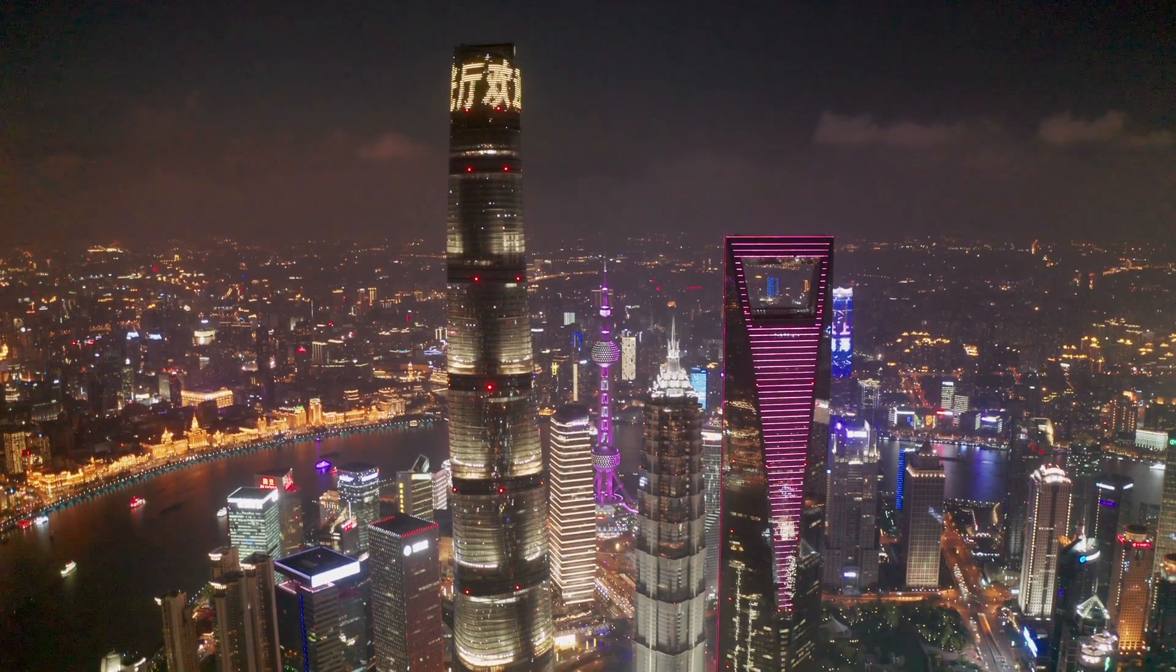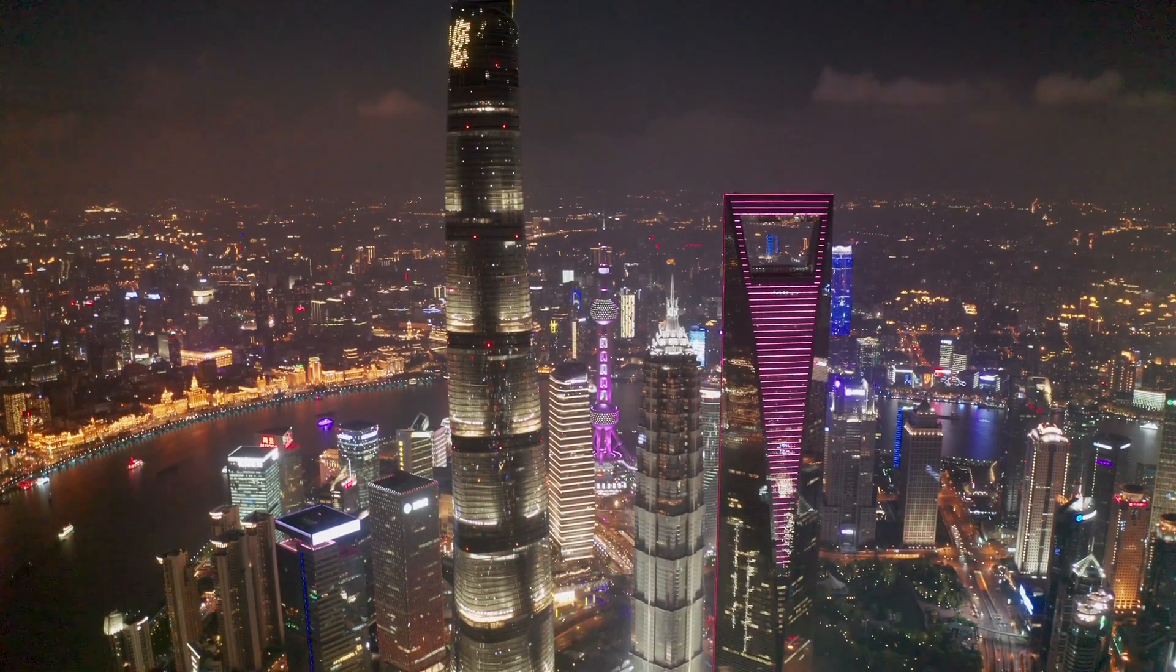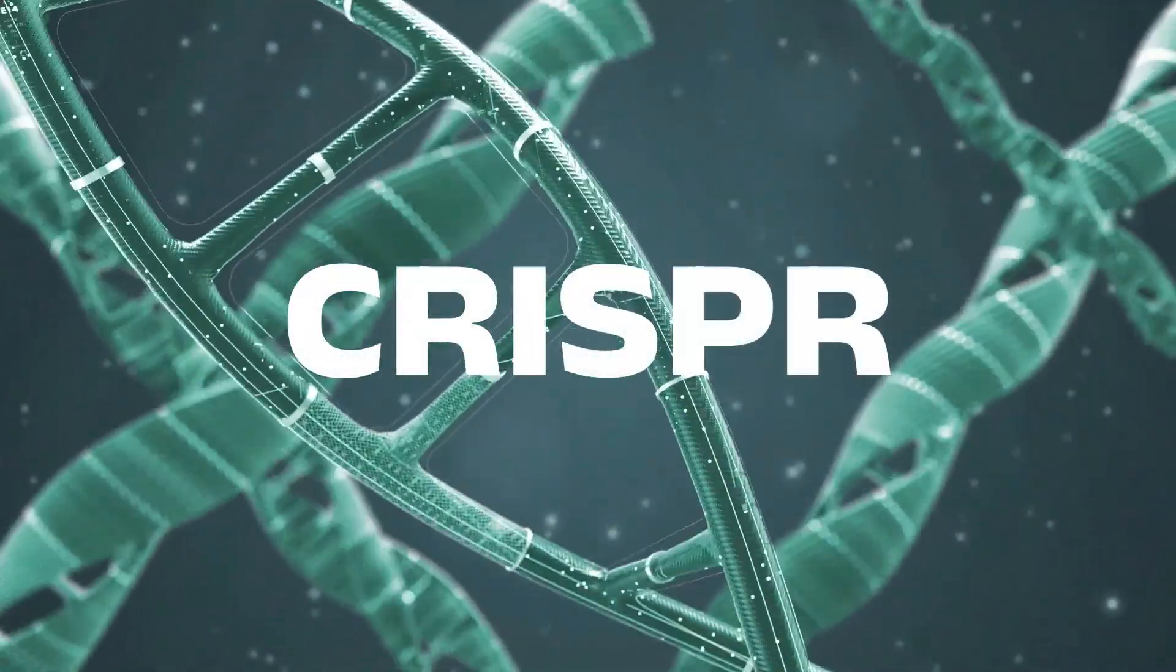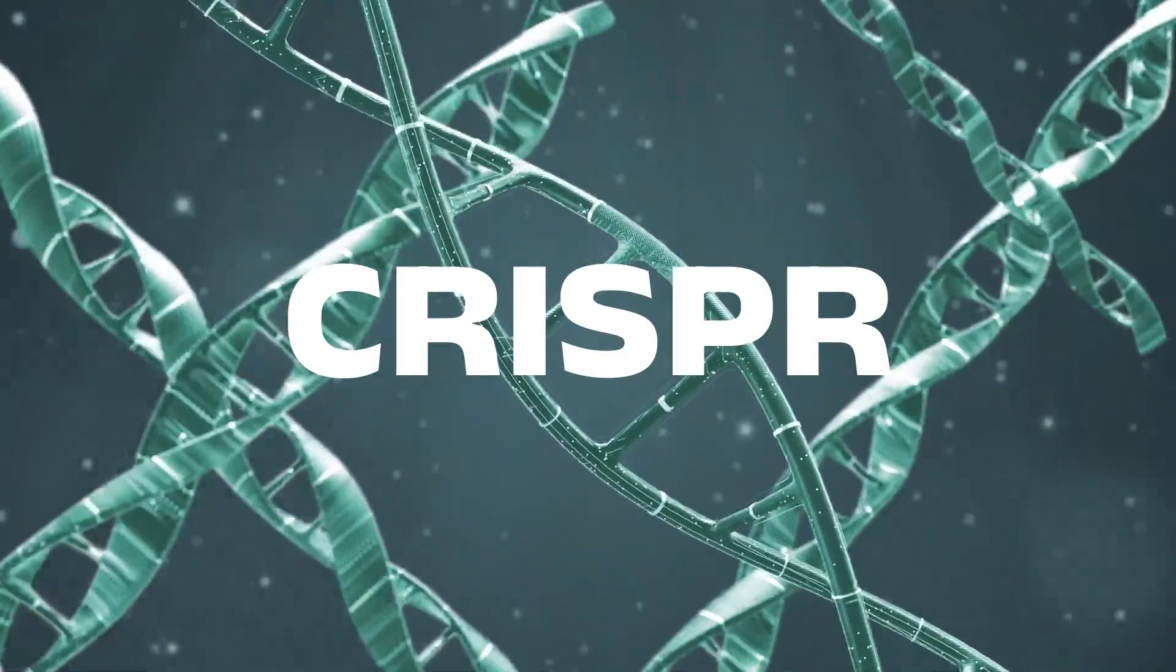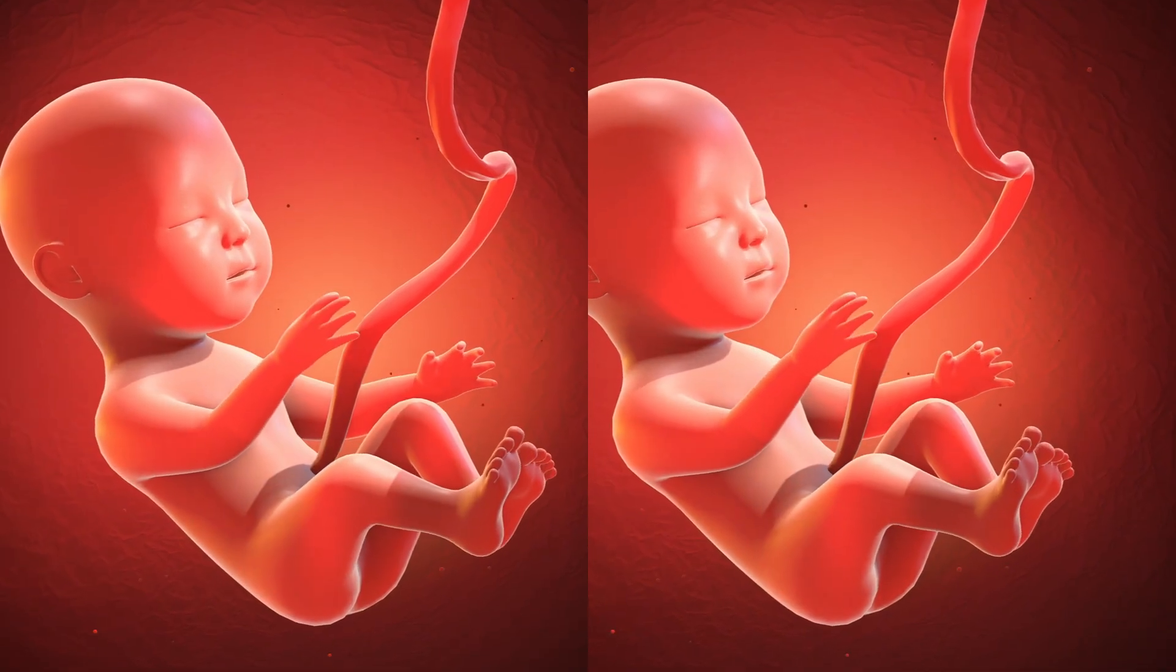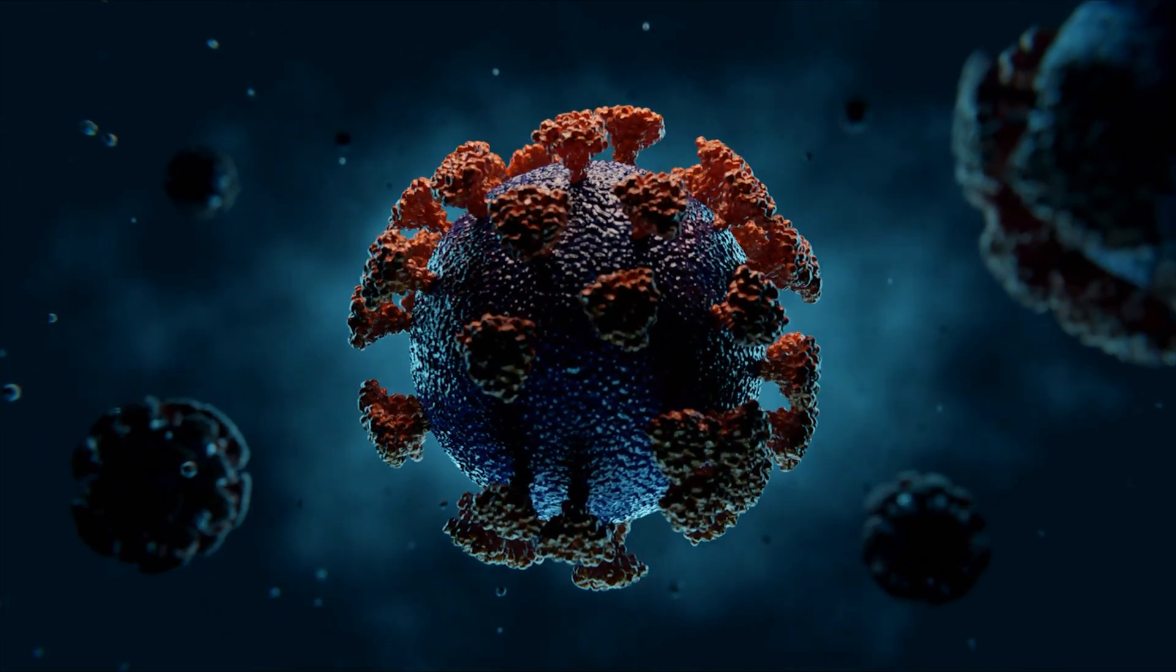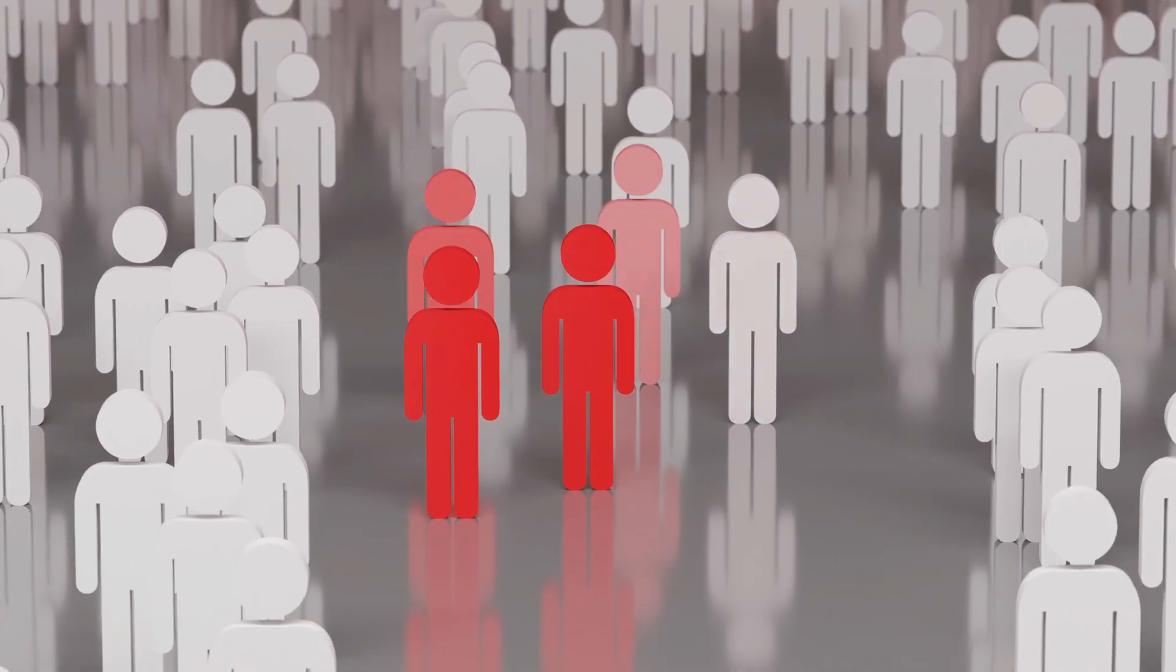In 2018, a Chinese scientist named He Jiankui announced something the world wasn't ready to hear. He had used CRISPR, a gene editing tool sharper than any scalpel, to alter the DNA of human embryos. Twin girls, born with genes modified to resist HIV. It was meant to be a medical breakthrough. Instead, it felt like the beginning of something uncontrollable.